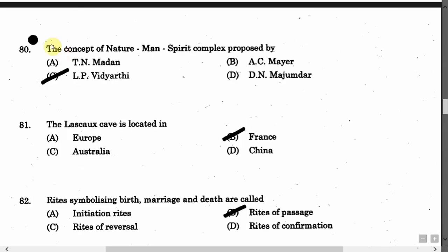The next question is: The concept of natural man-spirits complex was proposed by — Option A: T.N. Madan. Option B: A.C. Mayor. Option C: L.P. Vidyarthi. Option D: D.N. Majumdar. The correct answer is Option C, that is L.P. Vidyarthi.